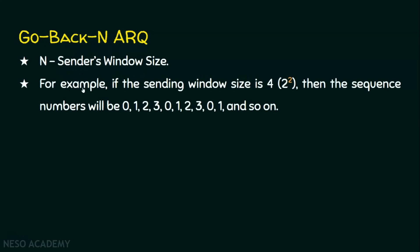N is the sender's window size. For example, if the sending window size is 4 — that is N equals 4 — then the sequence number will be between 0 and 3. This is because 4 can be written as 2 to the power 2, where 2 is the number of bits in the sequence number. With 2 binary bits: 00, 01, 10, 11 — whose decimal equivalents are 0, 1, 2, and 3. If we have 10 frames, this sequence number repeats: 0, 1, 2, 3, 0, 1, 2, 3, 0, 1, and so on.